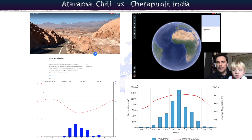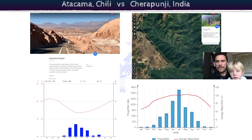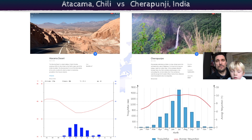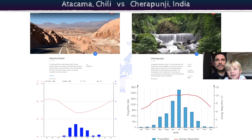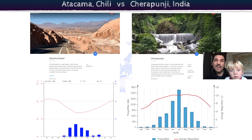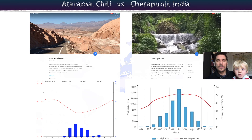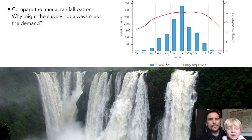Now let's look at Cherrapunji - this is in India, and it's the wettest area in the world. They get 12,000 millimeters of water a year - that's over 12 meters. Look at that giant waterfall - lots of waterfalls in Cherrapunji. The most recorded water in Cherrapunji in one year was 1985, and it was 1.2 meters in one hour - that's as big as you are in one hour. So much water!